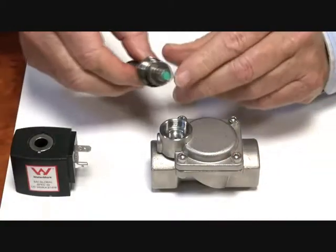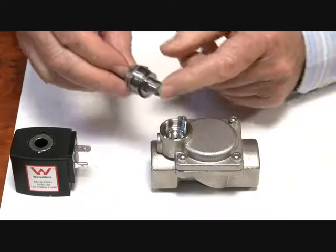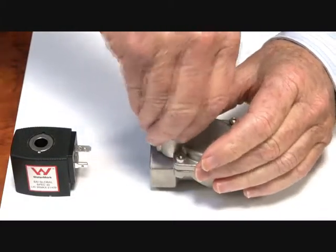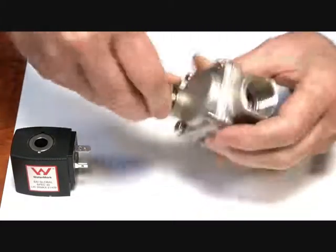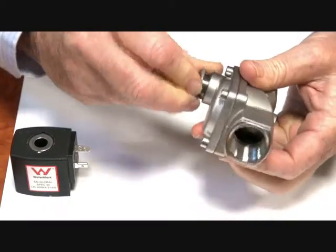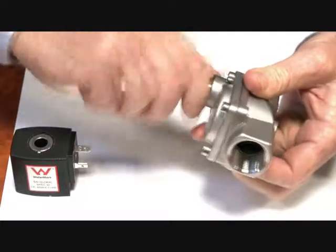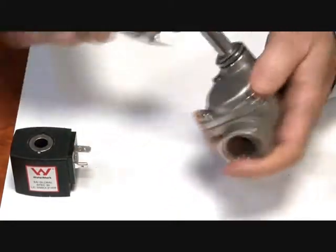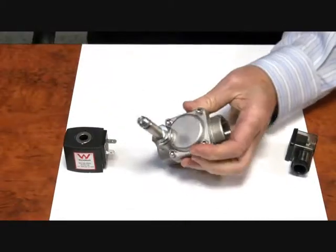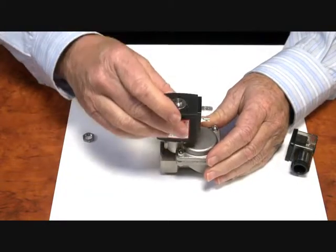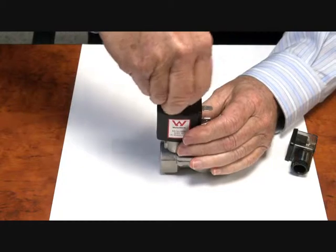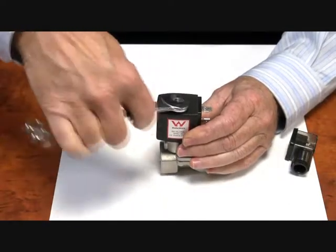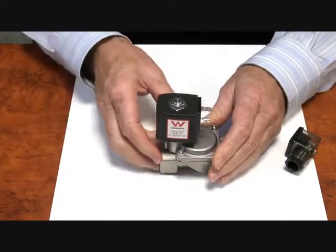The valve body is 304 stainless, and the diaphragm material is EPDM. The spring assembly goes on like that. Coil on here, and nut. The coil can be changed while the valve is working in line, any time. And that's the valve completed.